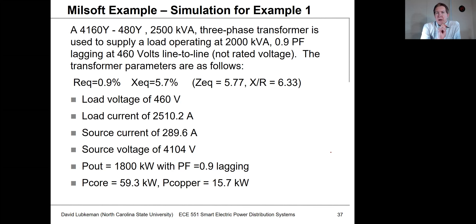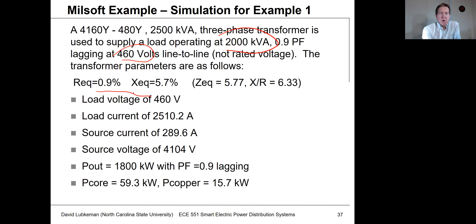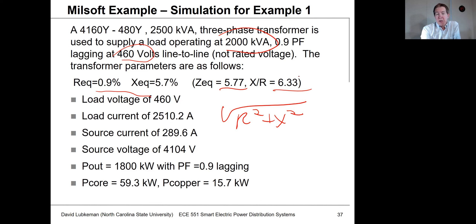In this section, I'm going to start off by going through an example in Milsoft Windmill, working the same problem we had in example number one. We have a 4,160 to 480 volt transformer, 2,500 kVA rating, with a 2,000 kVA load operating at 460 volts. We have this R equivalent and X equivalent. The magnitude of this impedance — square root of R squared plus X squared — is 5.77, and the X to R ratio is 6.33. This is the data entry we need in Windmill.